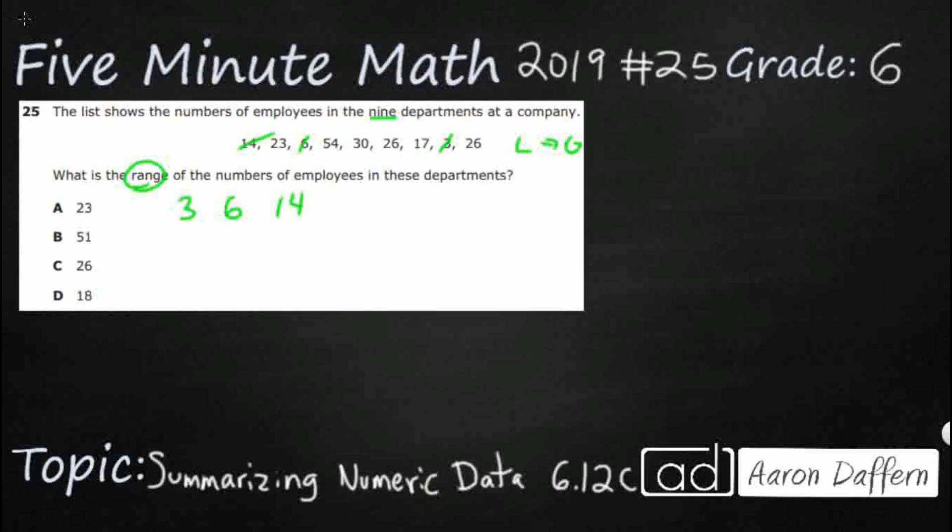And then we've got 17, let's see, 23, looks like we've got 2 26's. And then we've got a 30, 54. Alright, so we've got 9 numbers here, and we need to find the range.